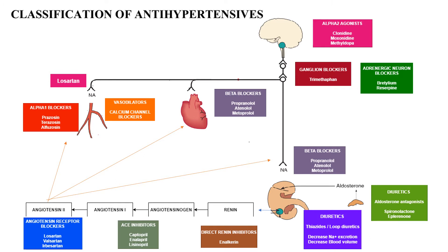A diuretics video has already been posted for reference. The most important diuretics used as antihypertensives are thiazide diuretics. They block sodium and water retention, causing excretion of sodium and water. Short-term effects are decreased blood volume and decreased cardiac output, which decreases blood pressure.